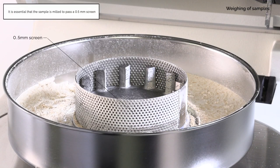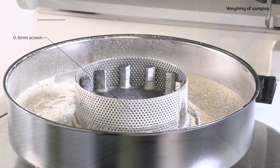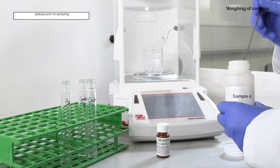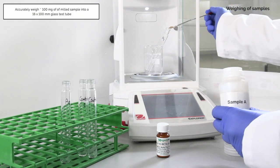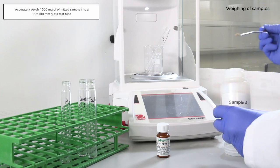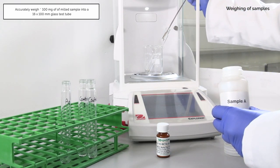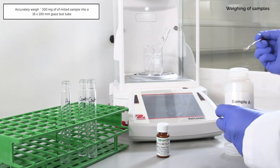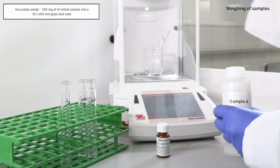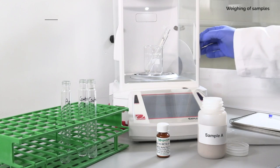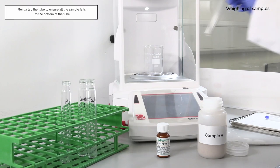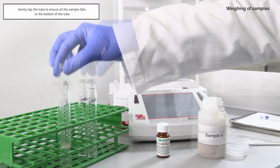In the beta-glucan analytical procedure, it is essential that the sample is milled to pass a 0.5 millimeter screen. Ensure the sample is mixed thoroughly by stirring with the spatula prior to sampling. Accurately weigh approximately 100 mg of milled sample into a 16 by 100 millimeter glass test tube and record the exact weight. Tap the tube to ensure that all of the sample falls to the bottom of the tube.